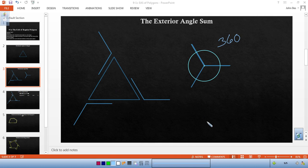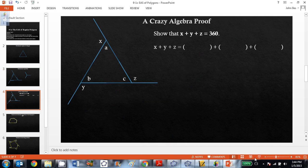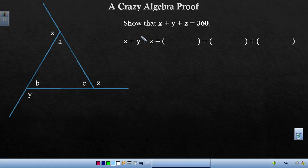We can actually provide evidence for this. And that's what we're going to look at next. So here's a crazy algebra proof of this idea that the exterior angles are going to sum to 360 degrees. So x plus y plus z. What are some values? What is x?